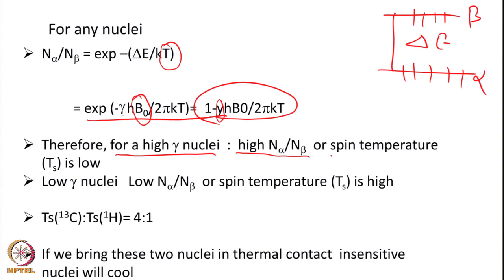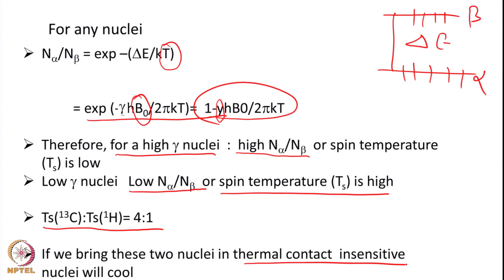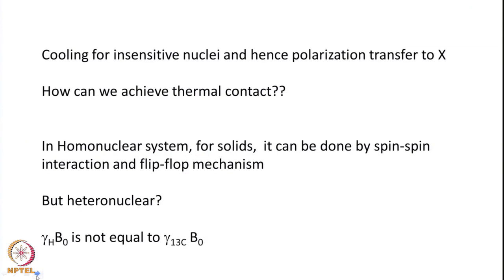If we bring the proton spin bath (low temperature) and carbon spin bath (high temperature) together into thermal contact, then spin temperature will flow from carbon to proton — or polarization will flow from proton to carbon — and carbon sensitivity can be enhanced. So if we bring these two nuclei into thermal contact, the insensitive nuclei will cool and their sensitivity can be enhanced. We want to cool the spin temperature of insensitive nuclei by putting them in thermal contact with low spin-temperature nuclei such as proton.